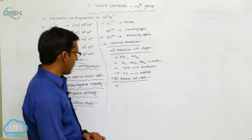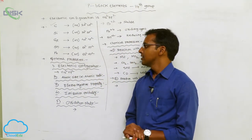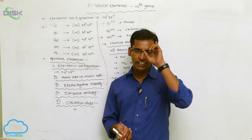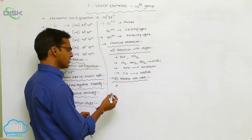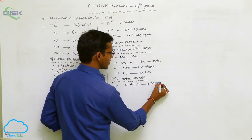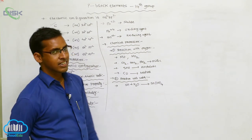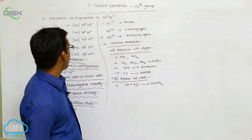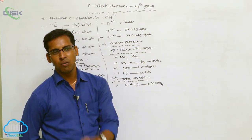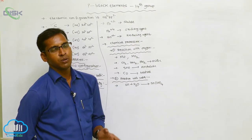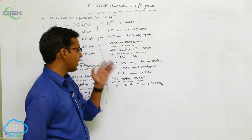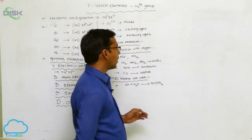Reaction with water: In Group 4A elements, carbon, silicon, and germanium are not reactive with water at ordinary temperature and are insoluble in water. At higher temperatures, these are sparingly soluble. Only tin metal reacts with water to form tin hydroxide — Sn(OH)₄. This is a special characteristic of Group 4A elements.